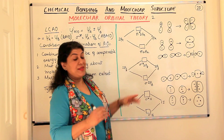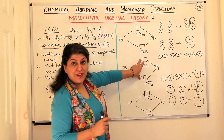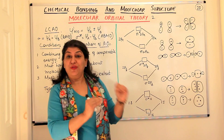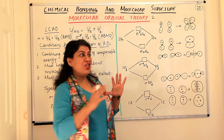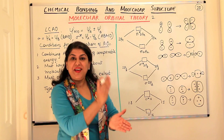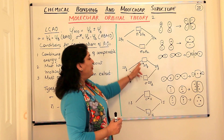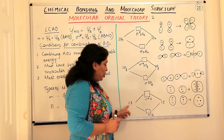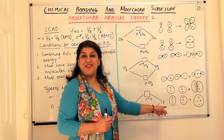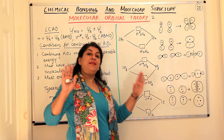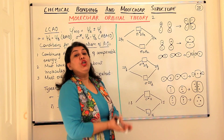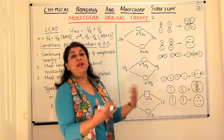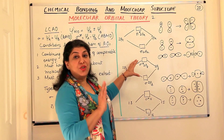Remember, what has happened here is only a redistribution of energy—energy has neither been lost nor gained. Therefore, the sum of the energies of the bonding and anti-bonding molecular orbitals should be equal to the sum of the energies of the atomic orbitals which combined to form them. This is something to keep in mind.